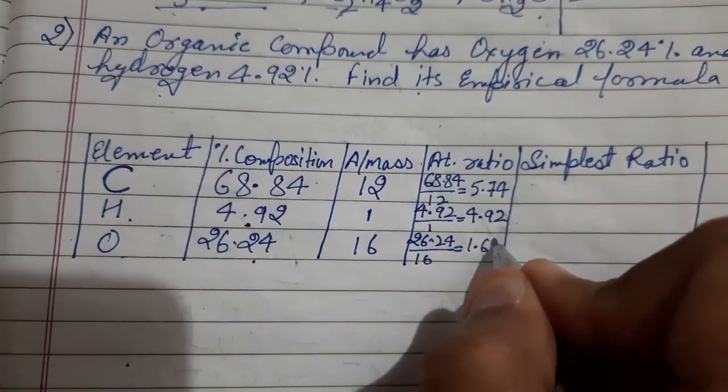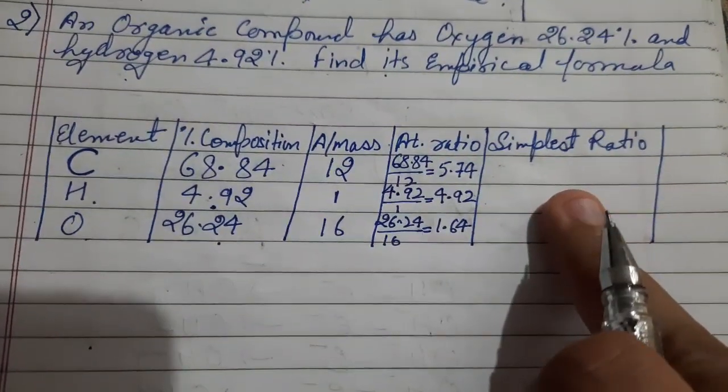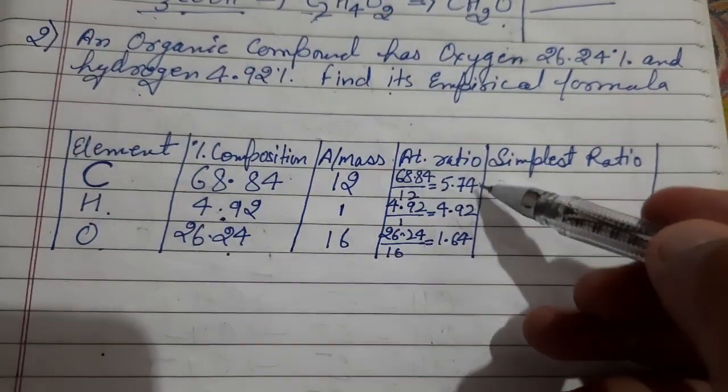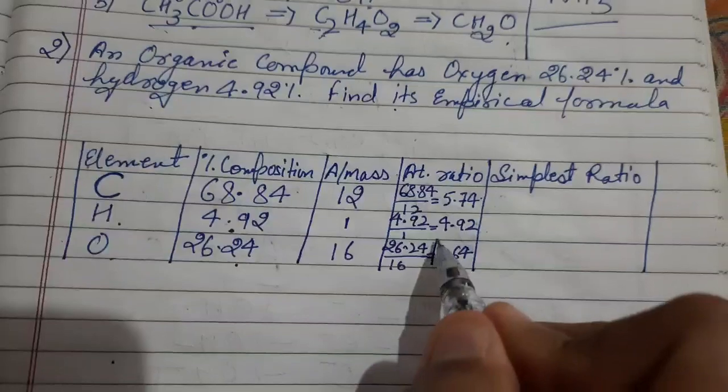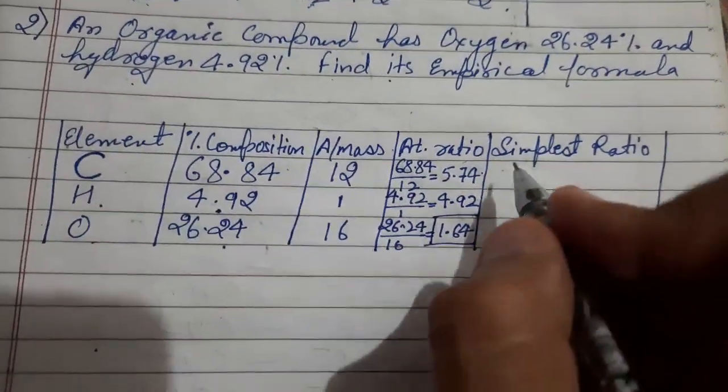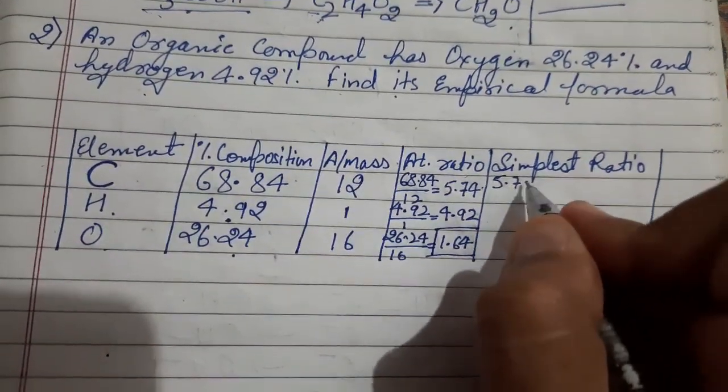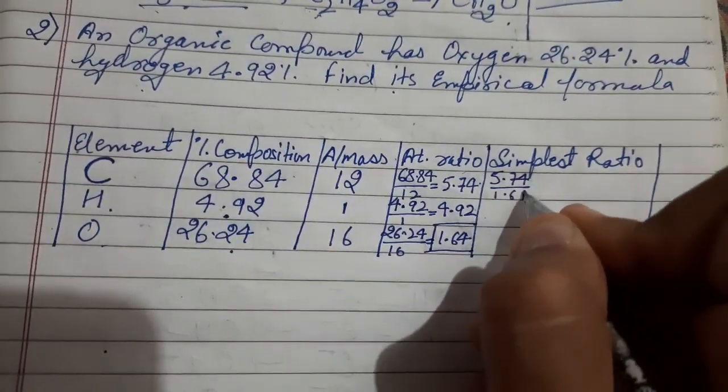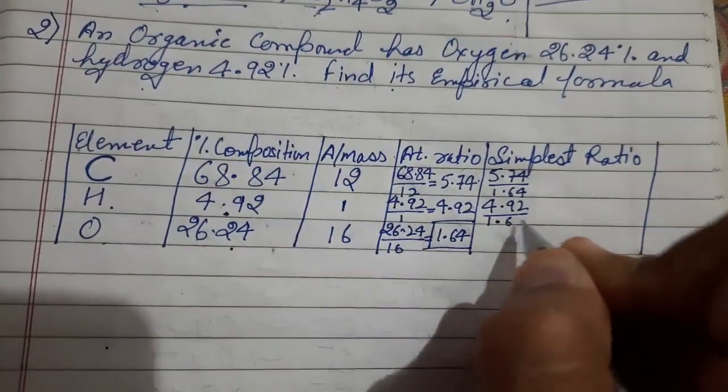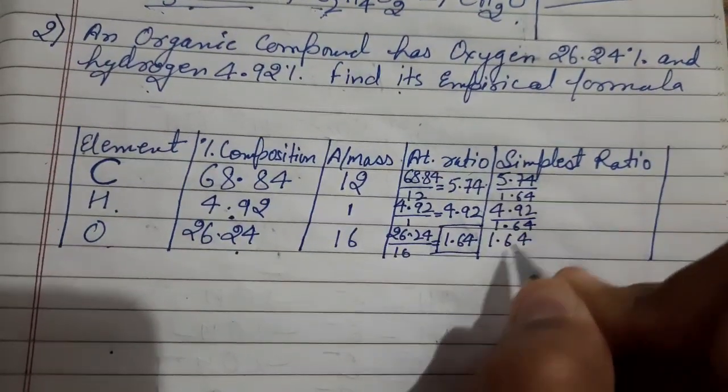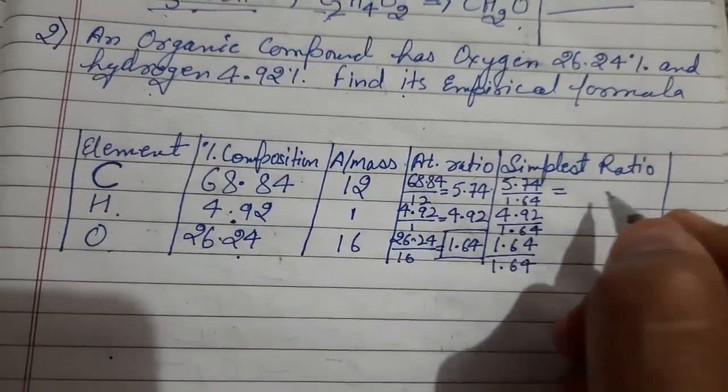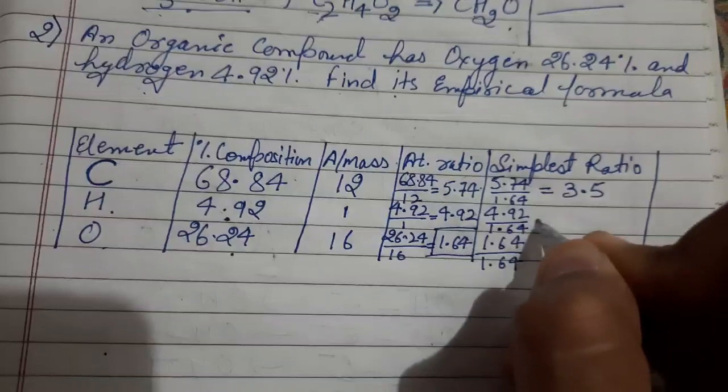Now you have to calculate in the next column simplest ratio. For simplest ratio you have to select which term is lowest, so here 1.64 is lowest, so you have to divide all these numbers with 1.64. I am going to write 5.74 divided by 1.64, then next is 4.92 again I have to divide it with 1.64, and in the last only 1.64 is there so same number 1.64 I have to divide. In the first case the number is going to come 3.5, in the next case number is 3, and in next case number is 1.